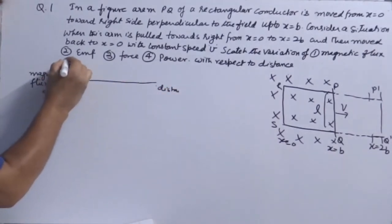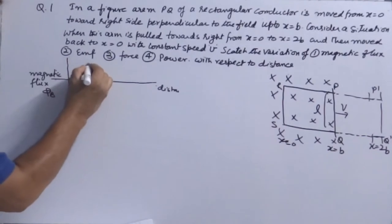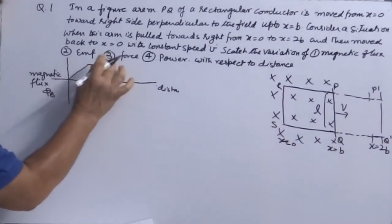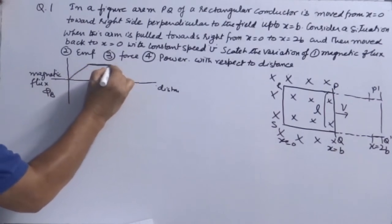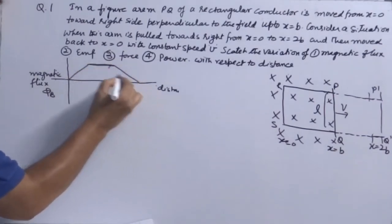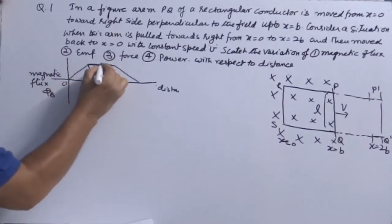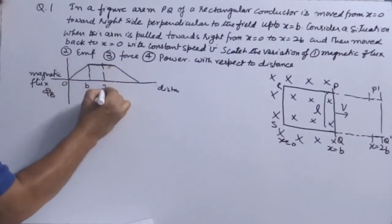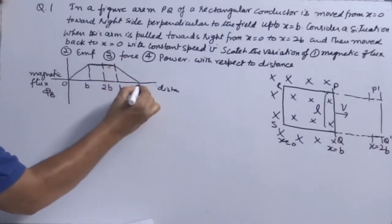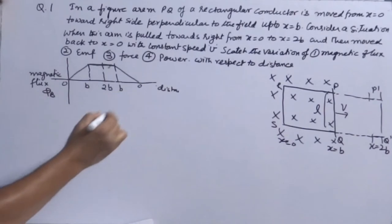Phi versus distance. What will be the shape of the graph? First it increases, then it becomes constant, continues constant, and then it decreases to 0. This is X equals 0 to B, in between somewhere it will be 2B, and this is B again, so it starts decreasing. This comes back to 0 again.